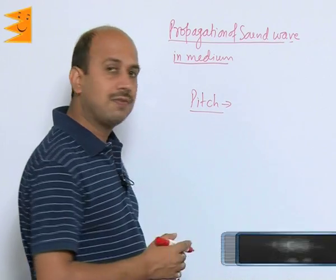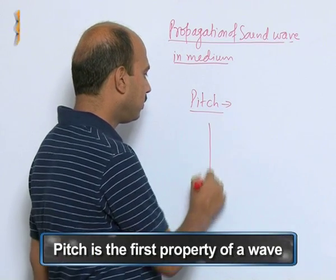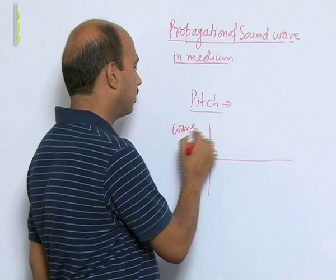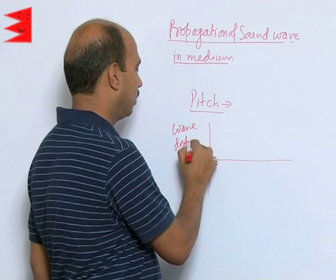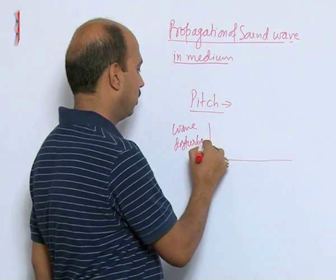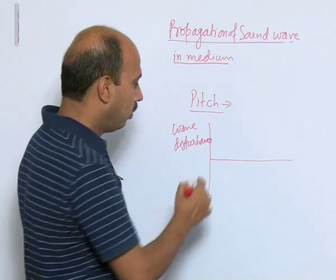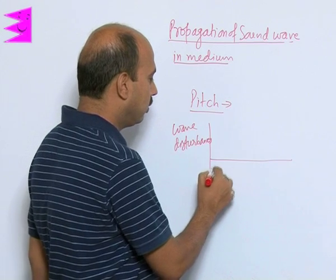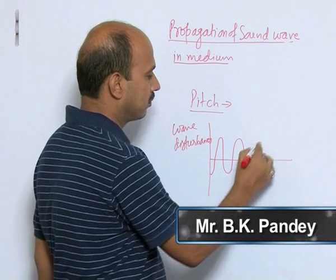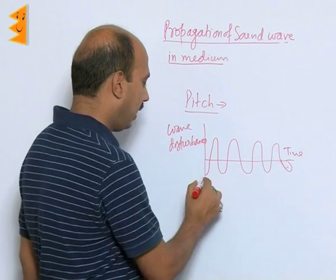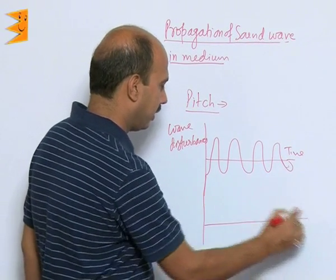We can represent all these things by graph. Suppose you have taken here wave disturbances in this side, and now we have taken like this wave, and another in the same one I have taken like this.